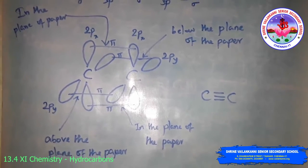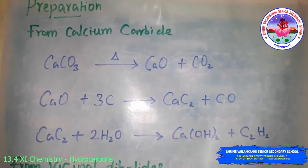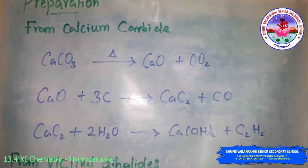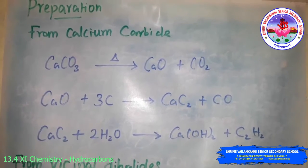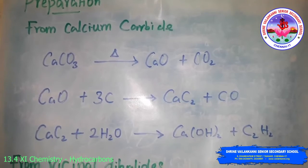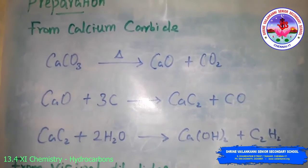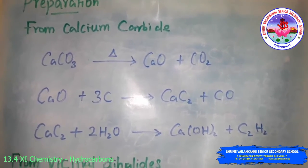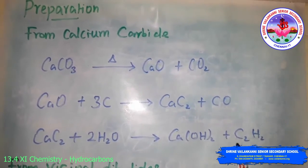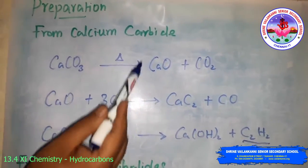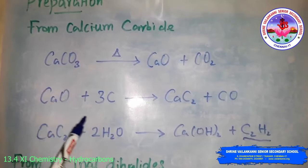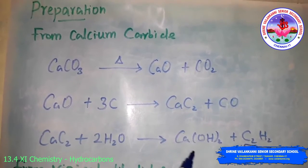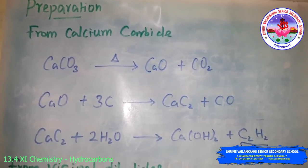Preparation of alkyne. The first method is from calcium carbide. On the industrial scale, ethyne is prepared by treating calcium carbide with water. Calcium carbide is prepared by heating quicklime with coke. Quicklime is obtained by heating limestone: CaCO3 → CaO + CO2. CaO treated with coke gives calcium carbide (CaC2). Then calcium carbide treated with water gives ethyne.